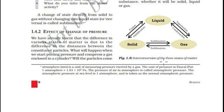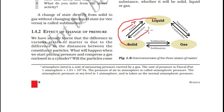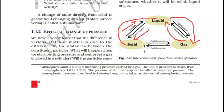Interconversion of three states of matter. There are generally three states of matter: solid, liquid and gas. The process of converting solid state to liquid state is known as fusion. The process of converting from liquid state to solid state is known as solidification. The process of converting liquid state to gaseous state is known as vaporization. The process of converting gaseous state to liquid state is known as condensation. Finally, the process of converting solid state directly to gaseous state — and also gaseous state to solid state — is known as sublimation. One example is naphthalene balls.